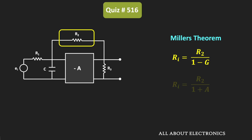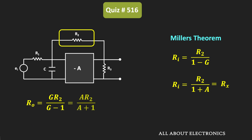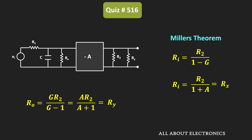Let's call that Rx. Similarly, on the output side, the resistance R0 can be given as G times R2 divided by G minus 1, where G is the open loop gain. In this case, that equals minus A times R2 divided by minus A minus 1, or equivalently A times R2 divided by A plus 1 — let's call that Ry. Using Miller's theorem, feedback resistor R2 is represented as Rx on the input side and Ry on the output side.